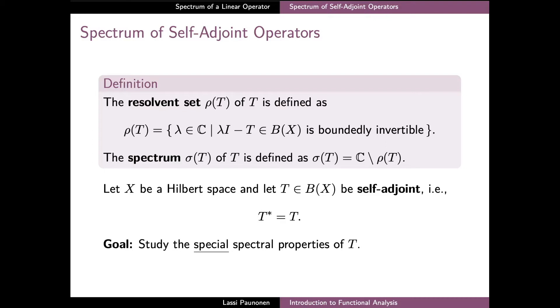By definition, T is self-adjoint if the adjoint of T is the operator itself. Even though this condition is quite strong, self-adjoint operators are a very important special class of bounded operators, similarly as symmetric and Hermitian matrices are important special classes of square matrices. In this video we will highlight a few of the main special spectral properties of self-adjoint operators.